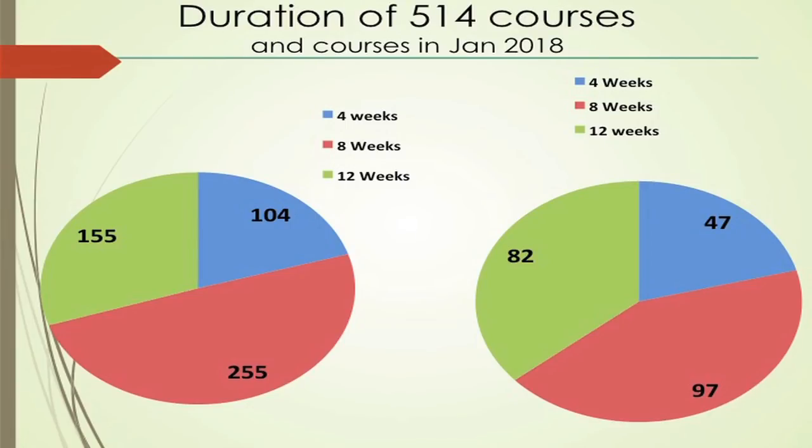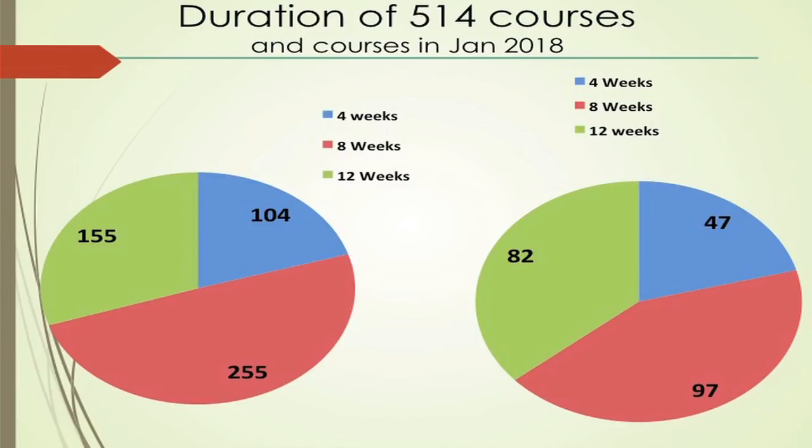Looking at the distribution of the 514 completed courses, the larger fraction was 8-week courses — roughly half of them — with the rest being 12-week and 4-week courses. Four-week courses are typically specialized electives where a semester-long course doesn't make sense, with just 10–12 lectures on a specific topic. In the upcoming semester, a much larger fraction is the 12-week course, which is growing — indicative of increased interest from faculty in full-semester content and faculty development programs.